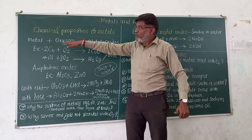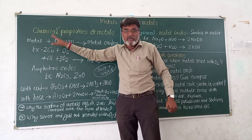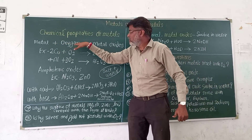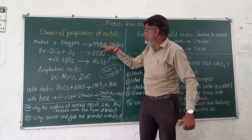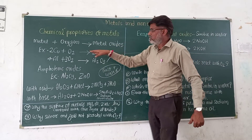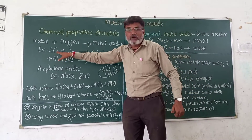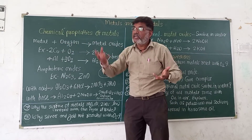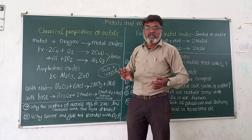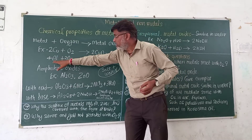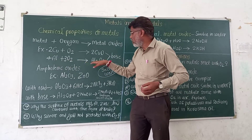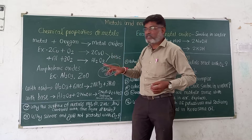First, when any metal reacts with oxygen, it forms metal oxides. For example, when copper reacts with oxygen in the air, it forms copper oxide. When aluminium reacts with oxygen in the air, it forms aluminium oxide as an air coating on the surface.